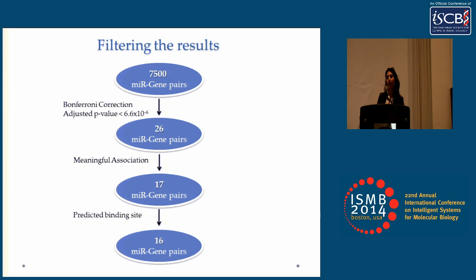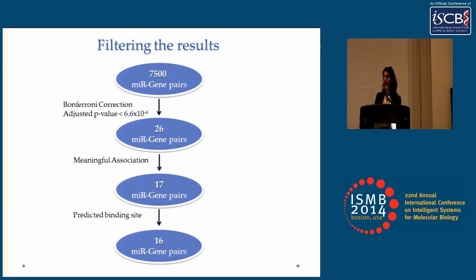A second audience member asked whether applying the predicted binding site filter at the beginning of the pipeline — rather than at the end — would affect the results. The presenter acknowledged they did not know how many of the 7,500 pairs would survive if that filter were applied first.